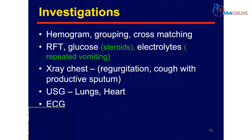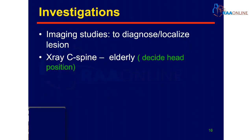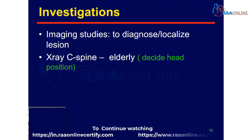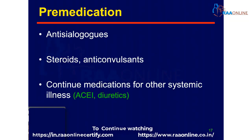Investigations would include hemogram, grouping and cross matching, renal function test, and glucose — especially if these patients are on steroids. Electrolytes if they give a history of repeated vomiting. Chest X-ray if the patients have lower cranial nerve palsy, as they could have had regurgitation and infection. Ultrasound of the lungs and heart, and ECG. Imaging studies are required to diagnose or localize lesions. Cervical spine X-ray may be required for the sitting position to decide on head positioning. Pre-medication should also be considered.